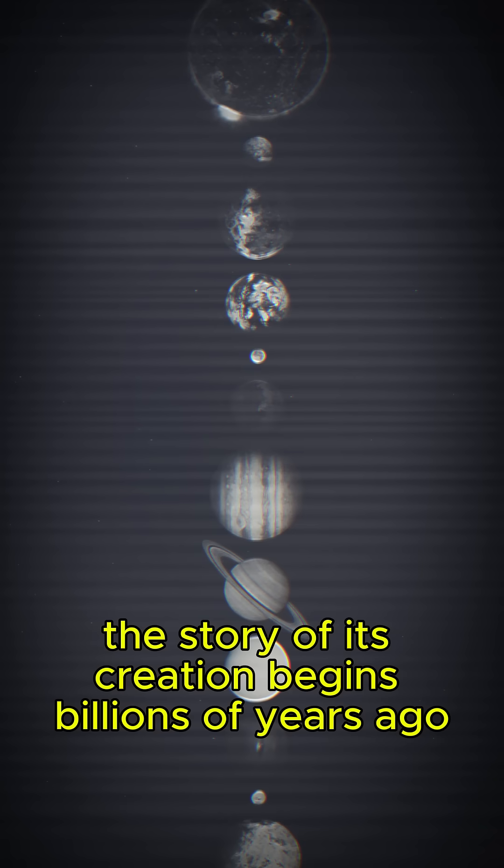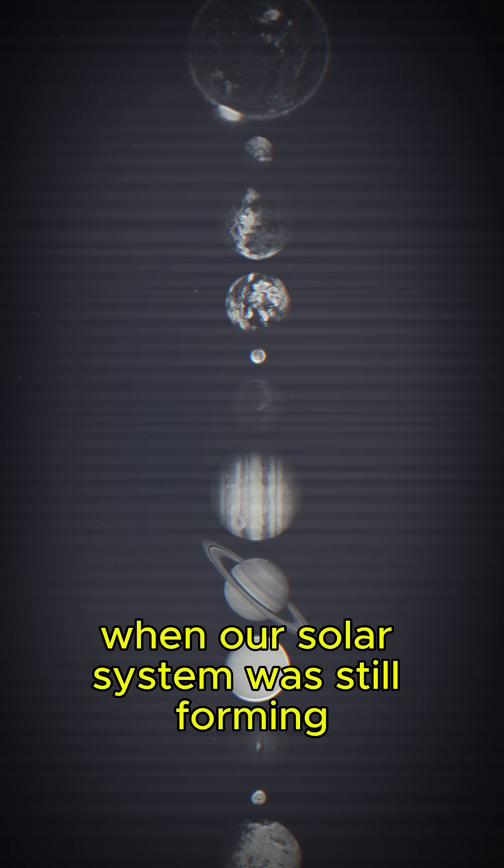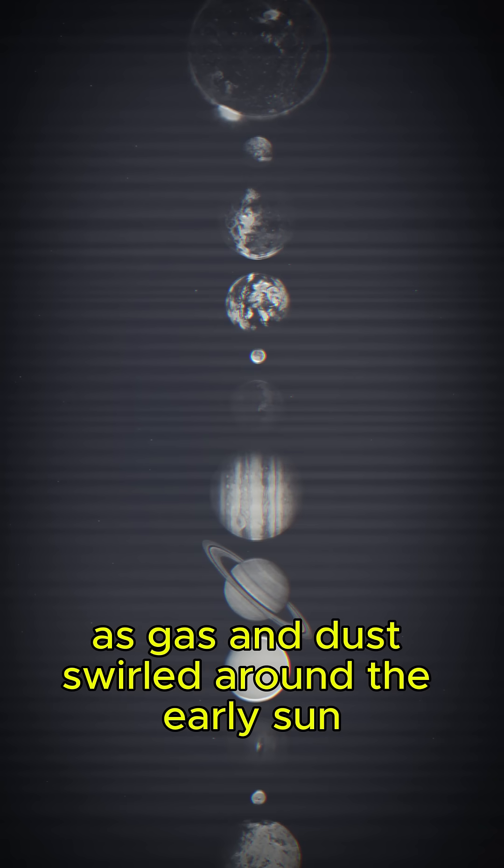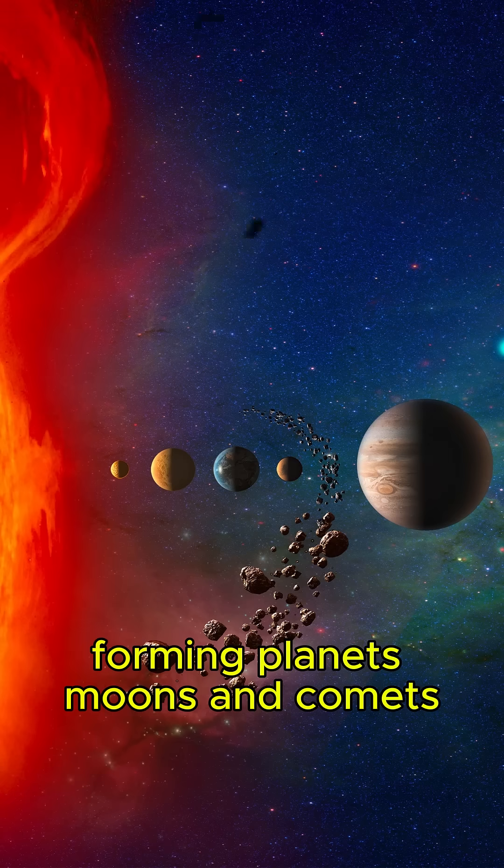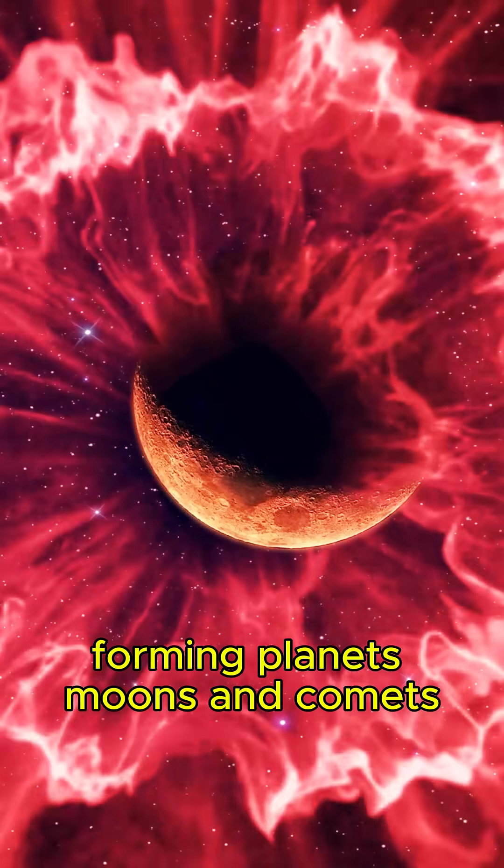The story of its creation begins billions of years ago, when our solar system was still forming. As gas and dust swirled around the early sun, gravity pulled these materials together, forming planets, moons, and comets.